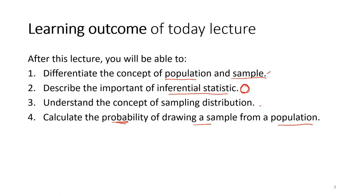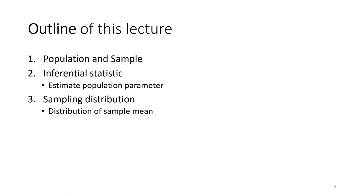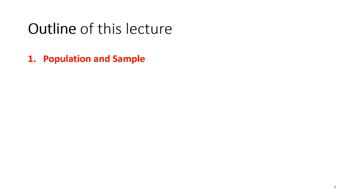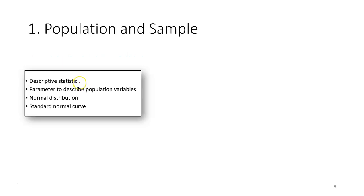In this lecture we're going to discuss in detail. First, we'll discuss about population — what is a population and what is a sample, and why we need to take a sample from a population. After that, we'll learn what inferential statistics is and how to estimate a population parameter using a sample. The last topic is about sampling distribution — the distribution of sample means.